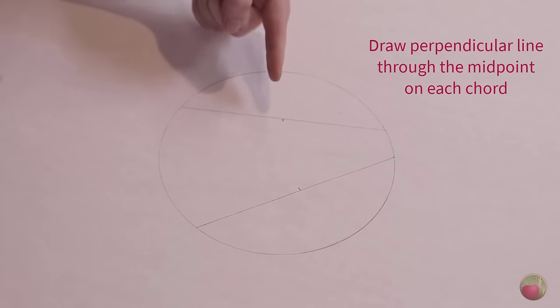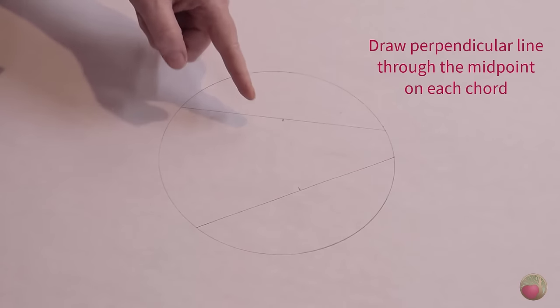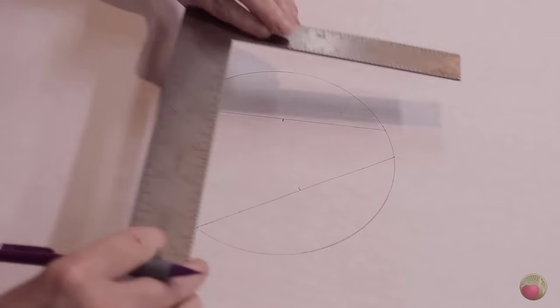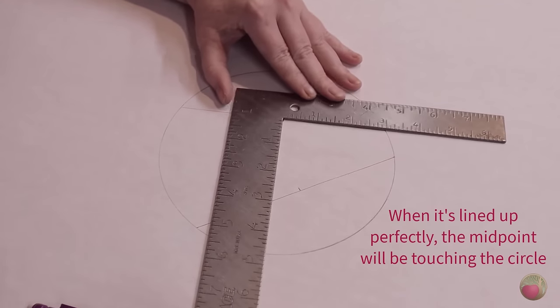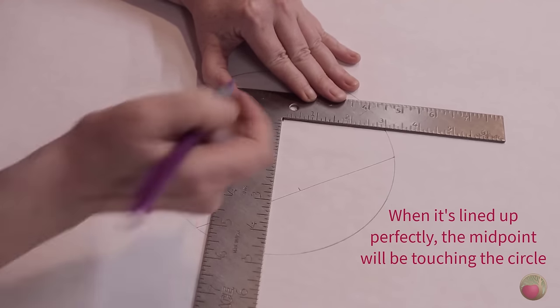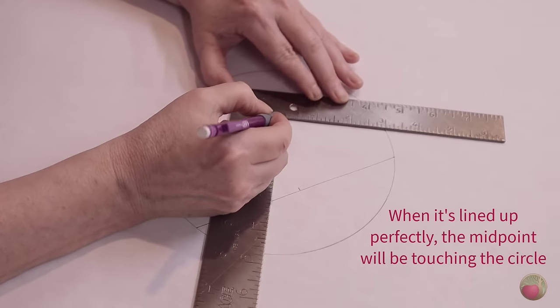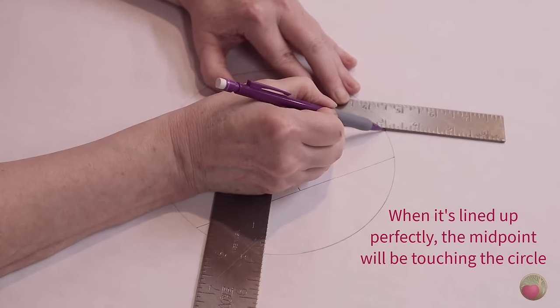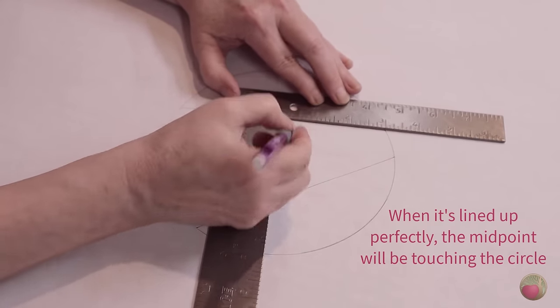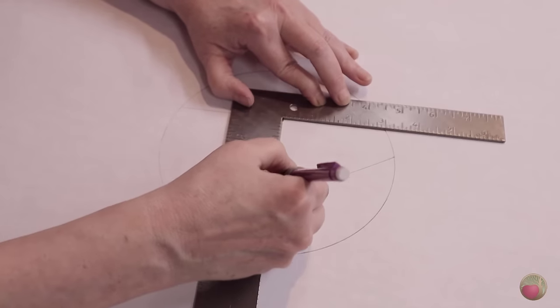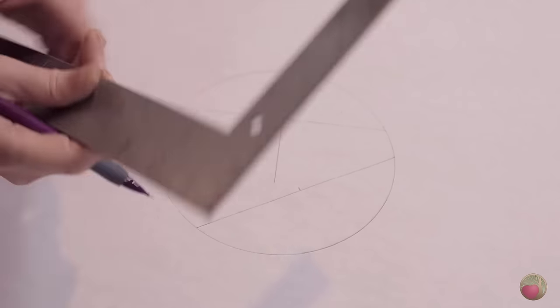Now the next thing we need to do is draw perpendicular lines through these cords. That should be real easy, and here's the beauty of doing it this way. When you get this thing lined up perfectly on the inside of your square, then your midpoint is going to be on the circle. So you know for sure that you've got it dead square laid out.